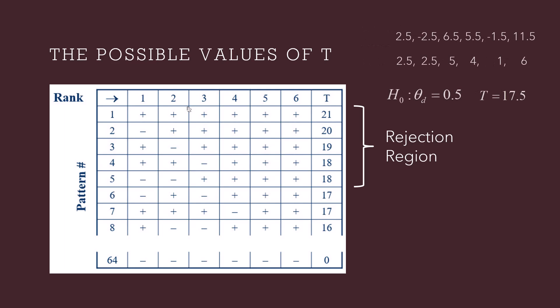What about h equals 0.5? Subtracting 0.5 from the original scores gives adjusted scores. The smallest absolute value is 1.5, which gets rank 1. Then we have 2.5 appearing twice, so we take mid-rank of ranks 2 and 3, giving each a rank of 2.5. The score 5.5 gets rank 4, 6.5 gets rank 5, and 11.5 gets rank 6. Adding the ranks for positive scores — 2.5, 5, 4, and 6 — gives 17.5. We're still not in the rejection region, so 0.5 goes into our confidence interval.